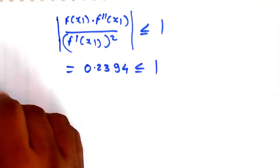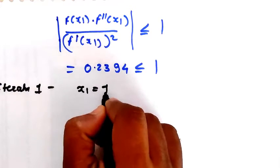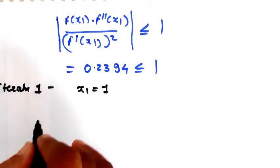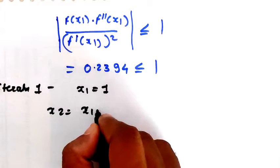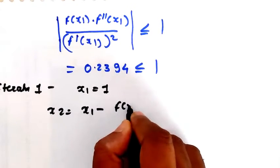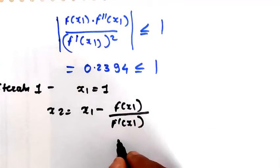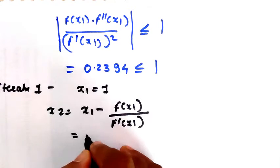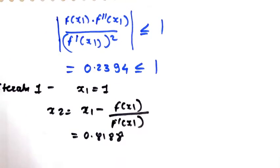Iteration 1: x₁ = 1. Now calculate the new root x₂ using the formula x₂ = x₁ - f(x₁)/f'(x₁). Putting in the values of f(x₁) and f'(x₁) that we found, we get x₂ = 0.8188.